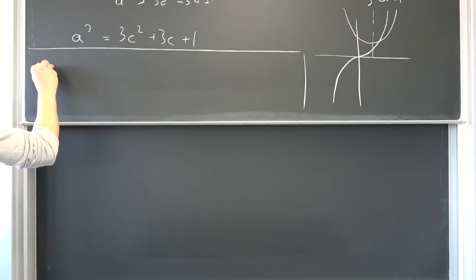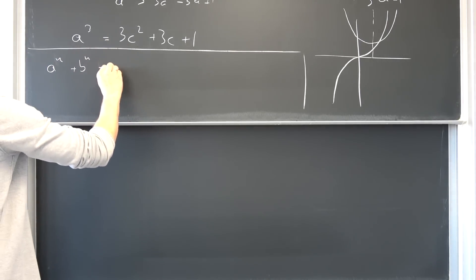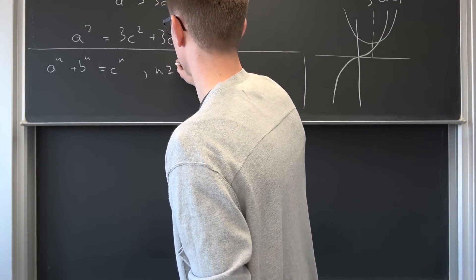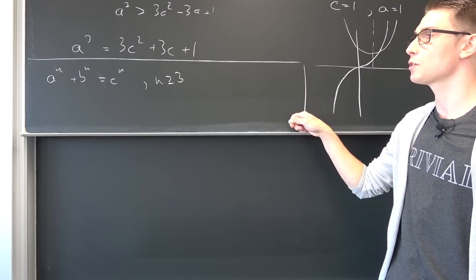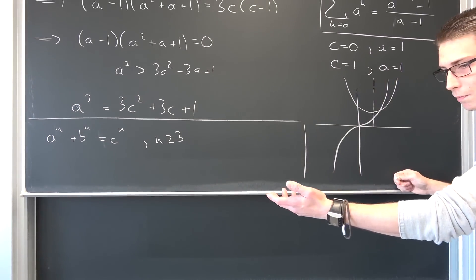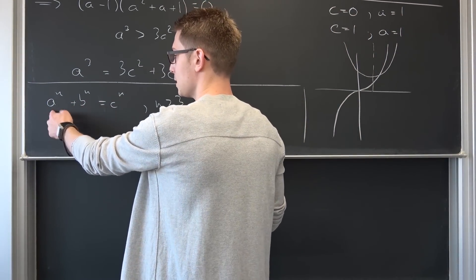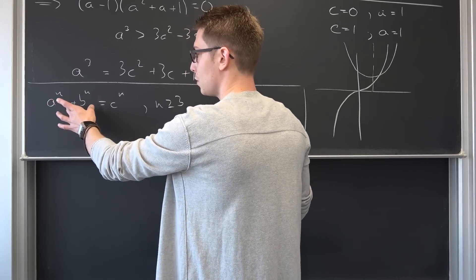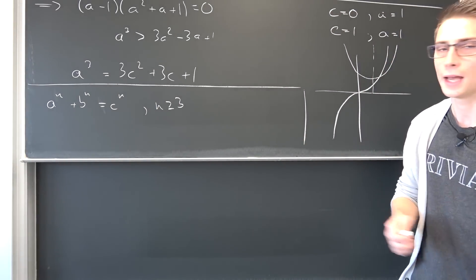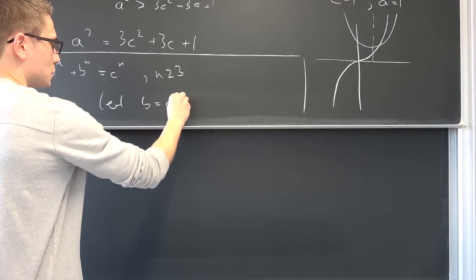Fermat's Last Theorem says that if we have a to the nth power plus b to the nth power equals to c to the nth power. There are no solutions for any n being greater or equal to 3 except for the trivial solutions. Trivial solutions meaning 0 0 0 or 0 1 1 or whatsoever all those permutations those are the trivial solutions. Now if you were to do a substitution, let b be equal to c plus 1.